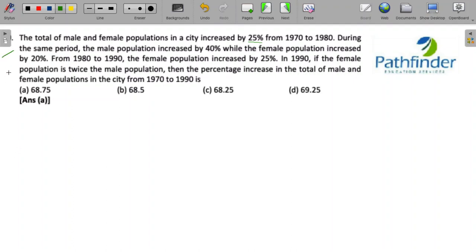CAT 2021 slot 3, quantitative aptitude, question number 10. The total of male and female populations in the city increased by 25%. We have male and female population and it increased by 25% from 1970 to 1980.